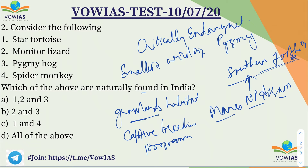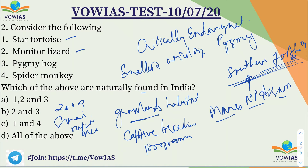In 2009, they were reintroduced in the Sonai Rupai area. As mentioned, they were once distributed all over the southern foothills but are now restricted only to Manas National Park in Assam. The spider monkey is found in Central and South America, so the fourth option is incorrect. The answer is A — 1, 2 and 3.